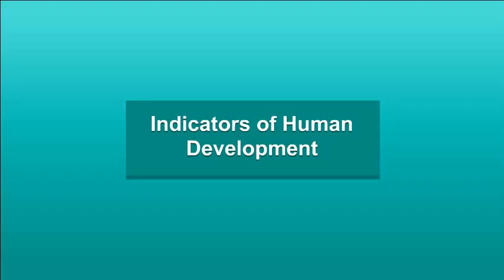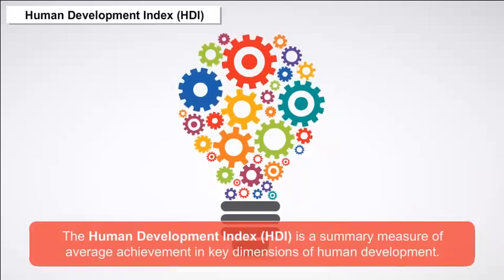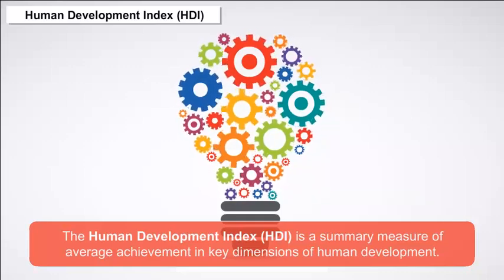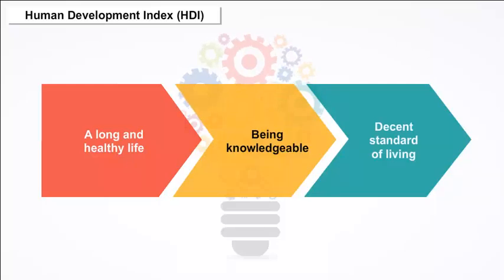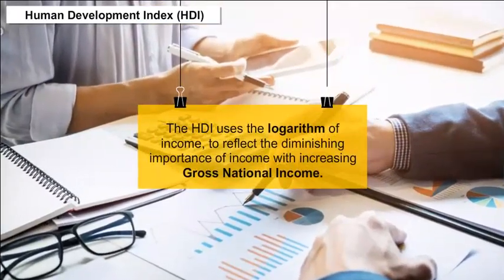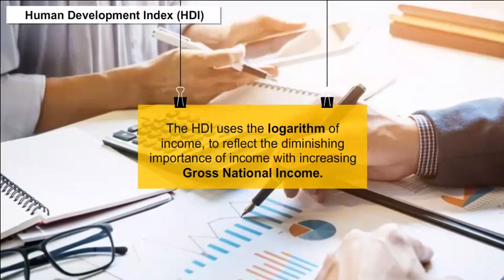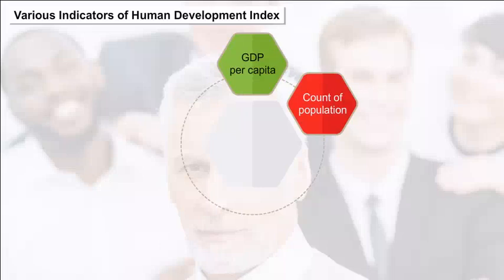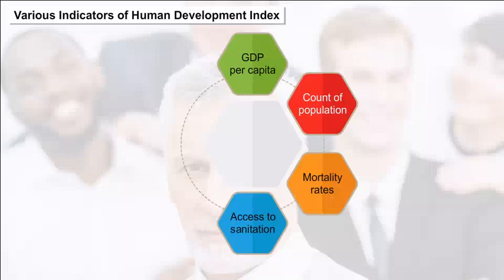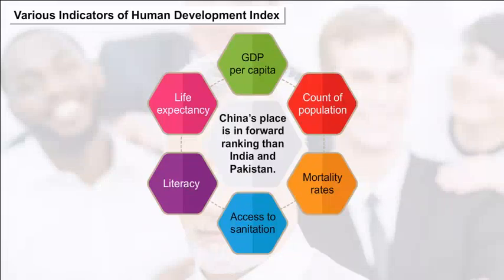Indicators of Human Development — Human Development Index (HDI): The HDI is a summary measure of average achievement in key dimensions of human development: a long and healthy life, being knowledgeable, and having a decent standard of living. The HDI uses the logarithm of income to reflect the diminishing importance of income with increasing gross national income. Across indicators such as GDP per capita, population below poverty line, mortality rates, access to sanitation, literacy, life expectancy, and malnourishment, China ranks ahead of India and Pakistan.